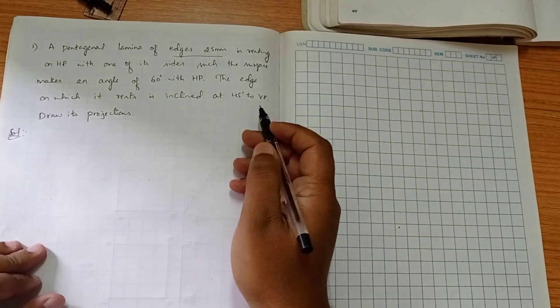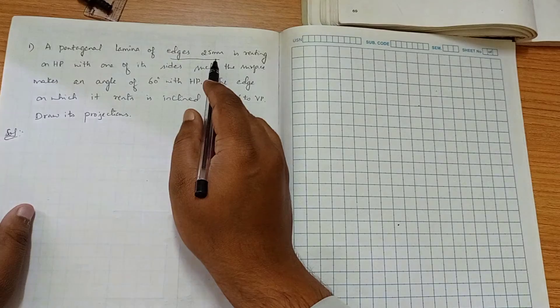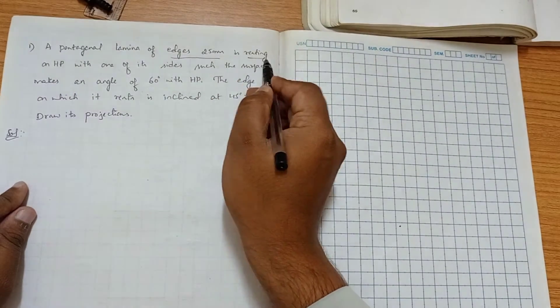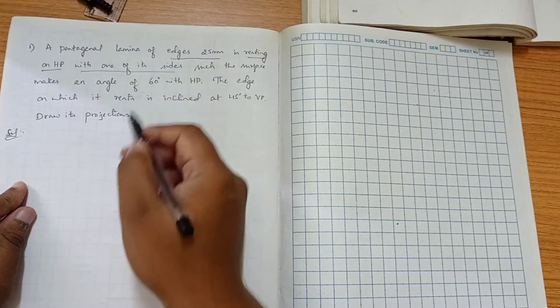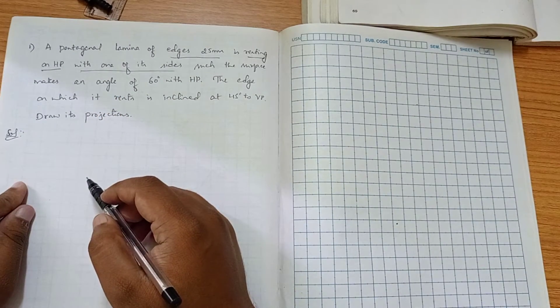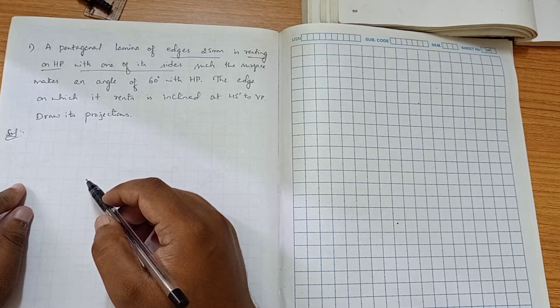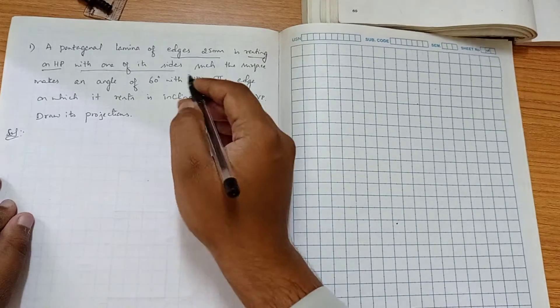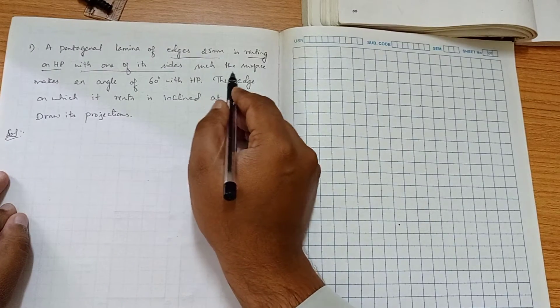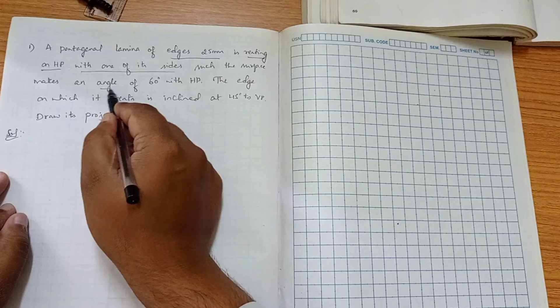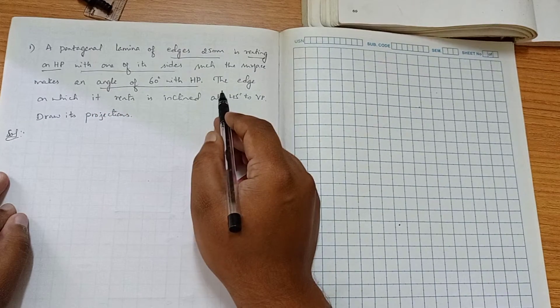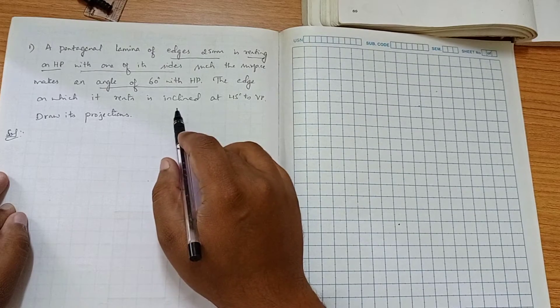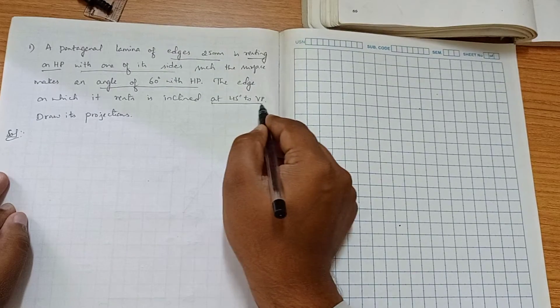We have to construct a pentagonal lamina of dimension 25 mm and it is resting on HPE with one of its sides. That means we have to construct a pentagon with respect to the edge on the left hand side. The inclinations such that the surface makes an angle of 60 degree with HPE. These are the inclination to the HPE. Now the same edge on which it rests is inclined at 45 degree to VPE.